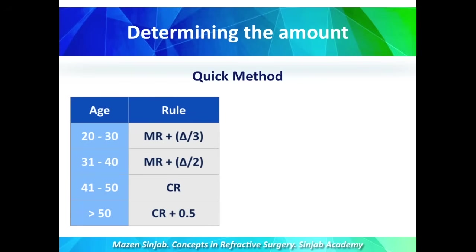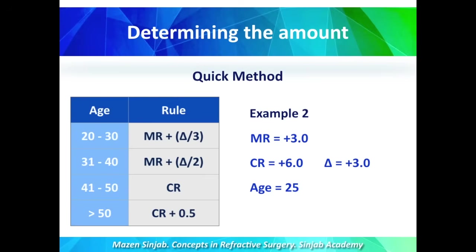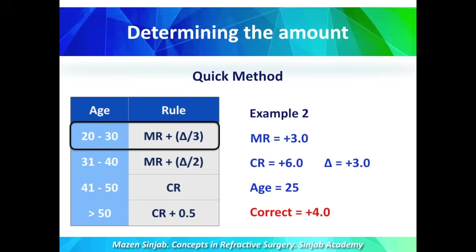Another example: a patient has manifest refraction of plus 3 and cycloplegic refraction of plus 6, so delta is plus 3. The patient is 25 years old. We apply the rule for age 20-30: manifest refraction plus one-third of delta. In this case, we are going to correct plus 4 diopters.